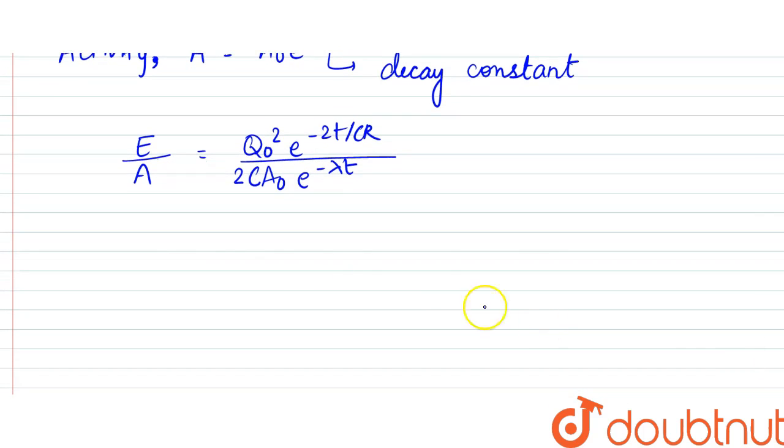Everything else is constant, so this should be constant. The coefficients are independent, the terms are independent of these coefficients. So what we can write is this 2t by CR would be equal to λt.